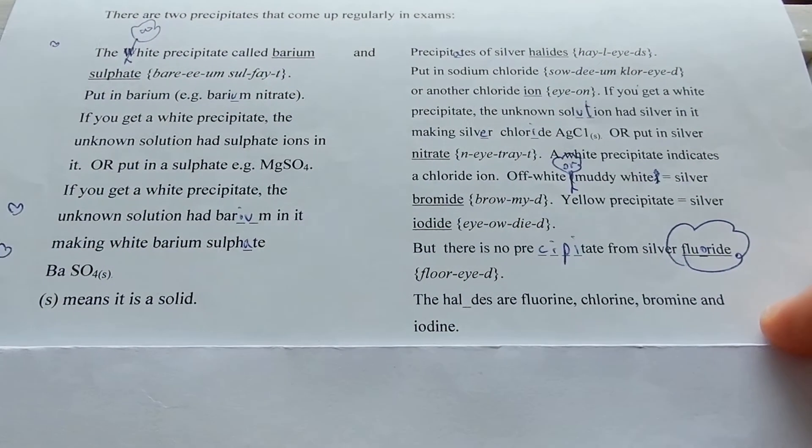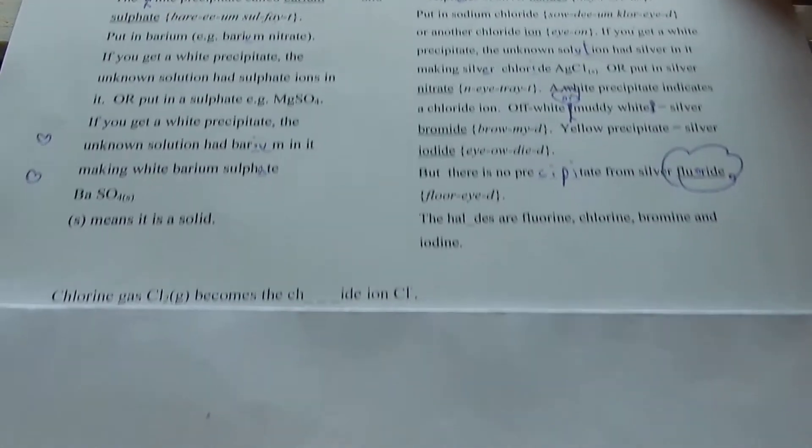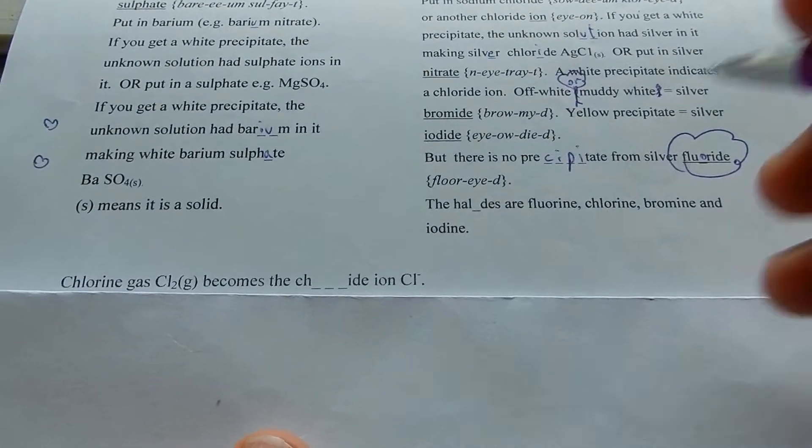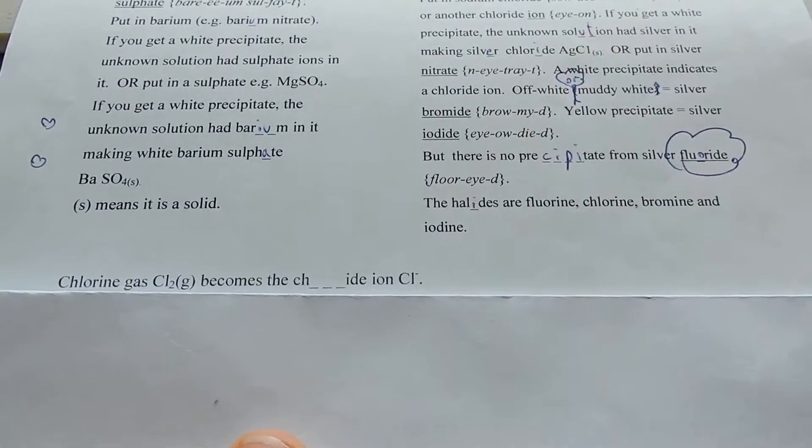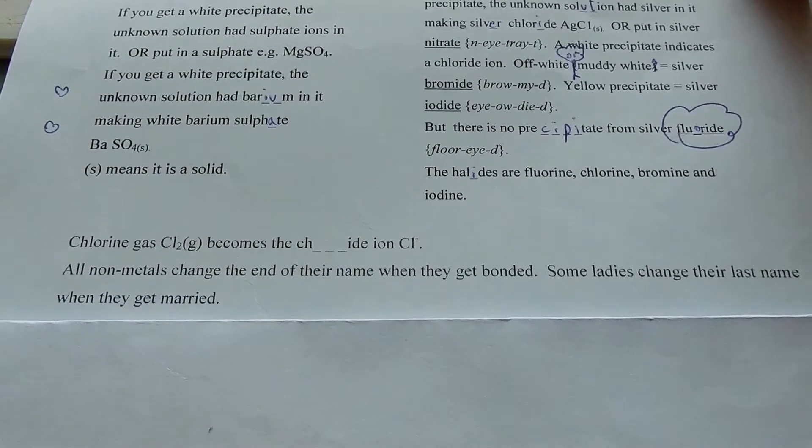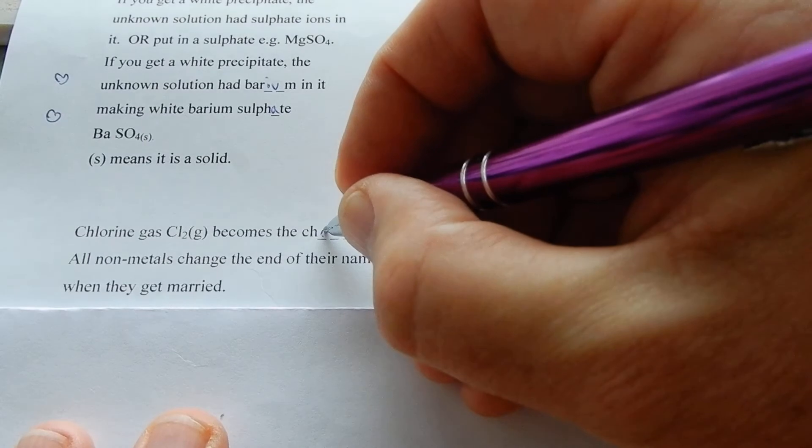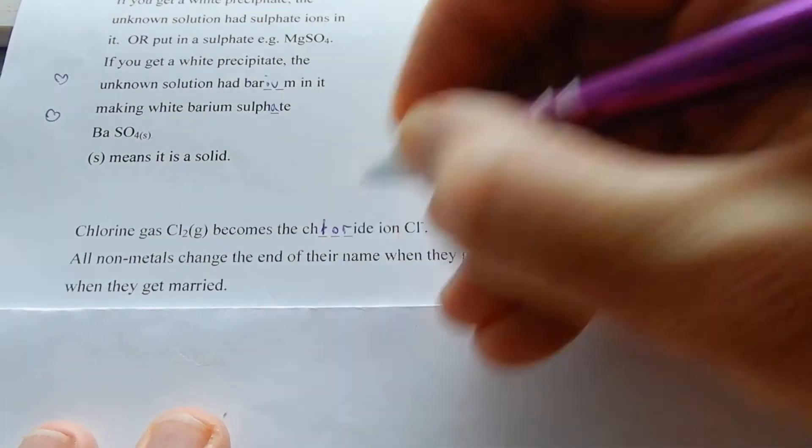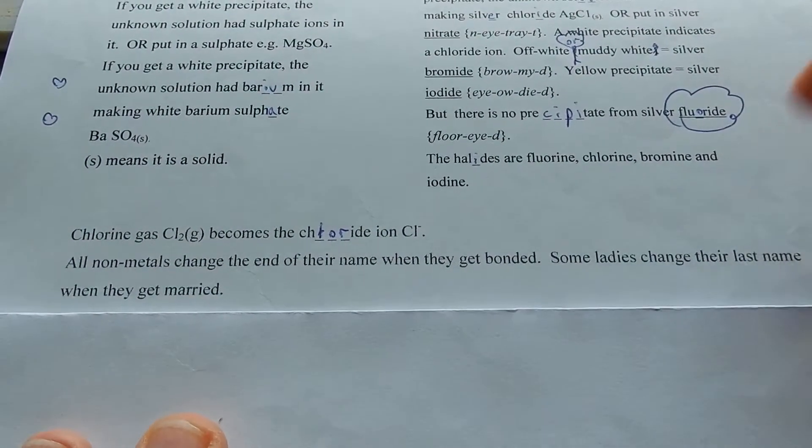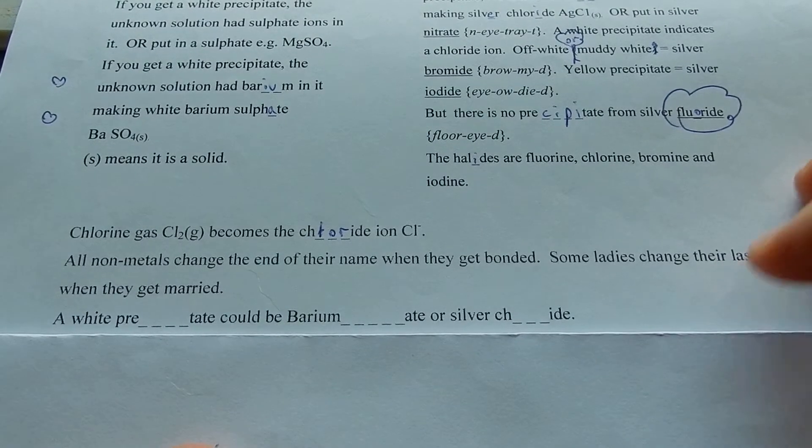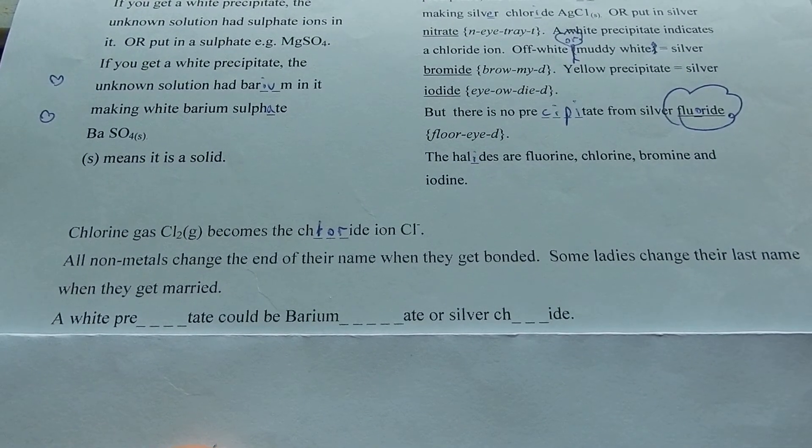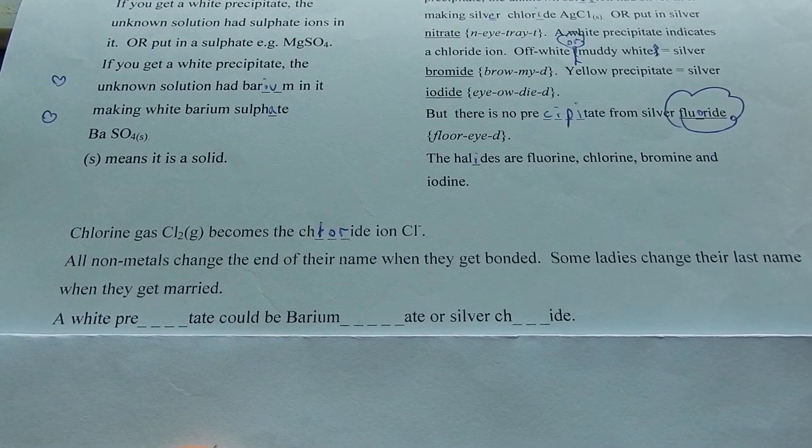The halides are fluorine, chlorine, bromine, and iodine. Chlorine gas, Cl2, becomes the chloride ion, Cl-. All non-metals change the end of their name when they get bonded. Some ladies change their last name when they get married.